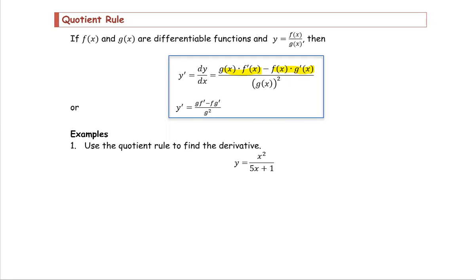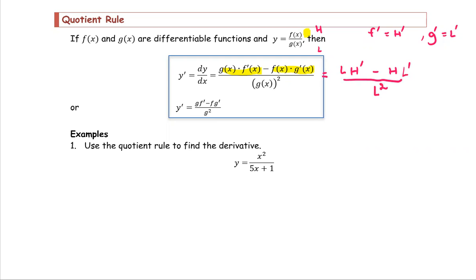Another way to recognize it: consider f as the high function and g as the low function. Then f prime is the derivative of the high, and g prime is the derivative of the low. We call these d-high and d-low respectively. This gives us: low d-high minus high d-low, all divided by low squared, where low is g and high is f.